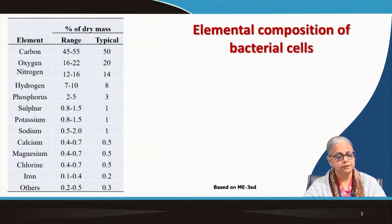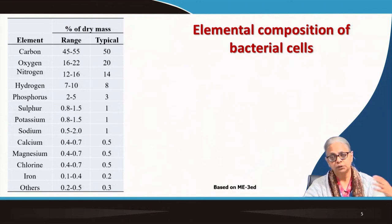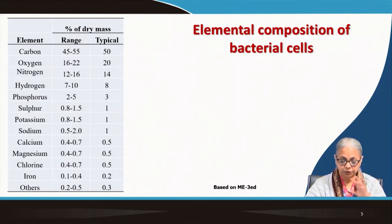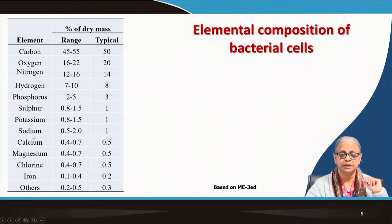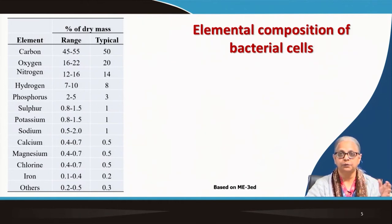It is very important for everyone to remember the key macronutrients. By definition, if any element constitutes more than 1% of the total dry biomass of the organism, it is a macronutrient. Along with the big six, we also have potassium and sodium for bacterial cells. The micronutrients — calcium, magnesium, chlorine, iron, and other elements — constitute less than 1% of the dry weight of bacteria.